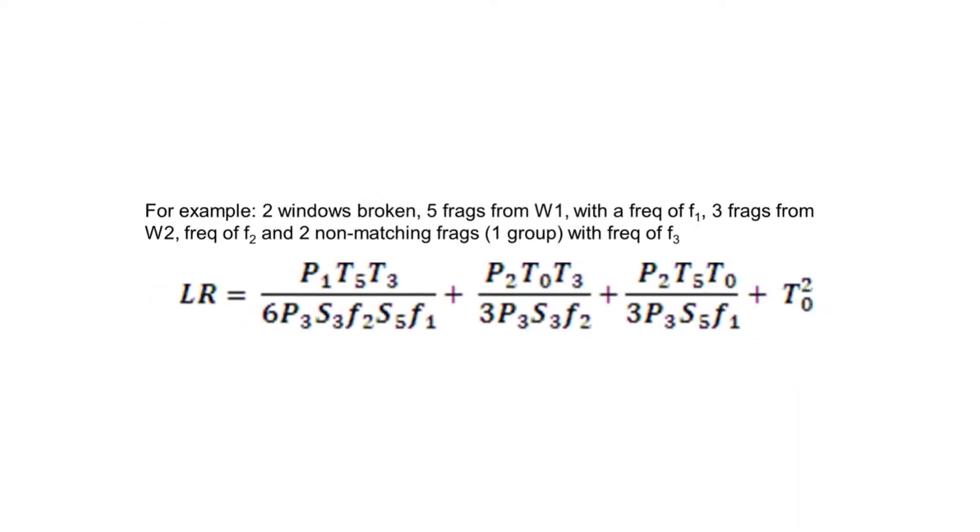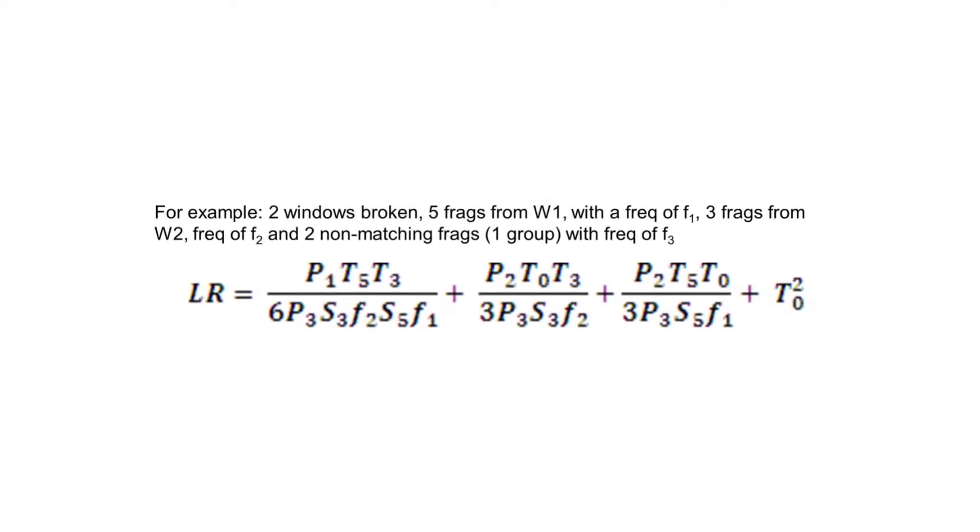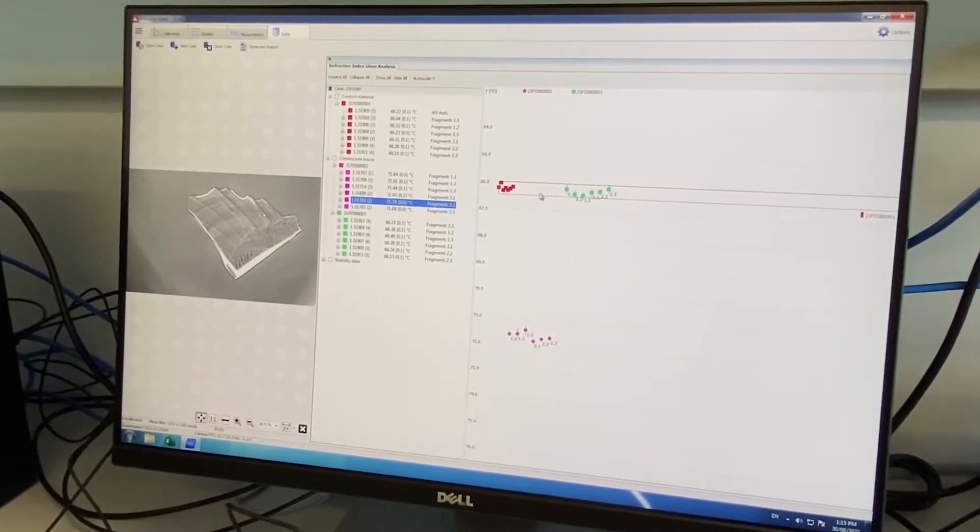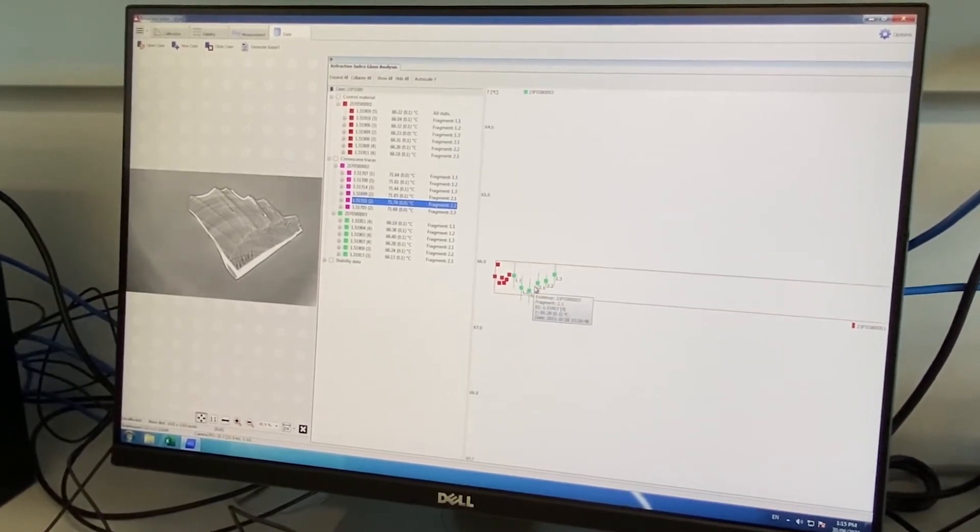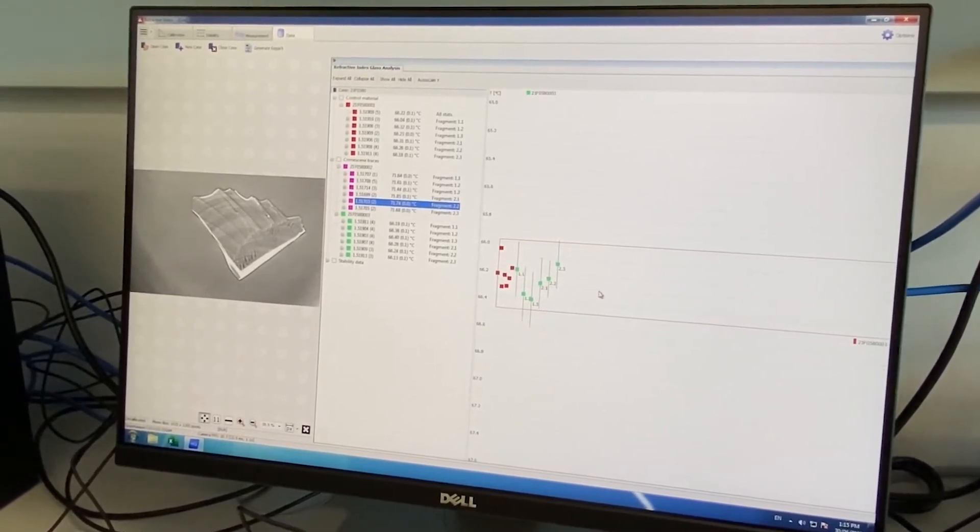Some of those statistics rely on published data which measured how common it is to find broken glass in people's clothes. Turns out that when the data was collected, it wasn't very common to find lots of fragments of glass on someone.